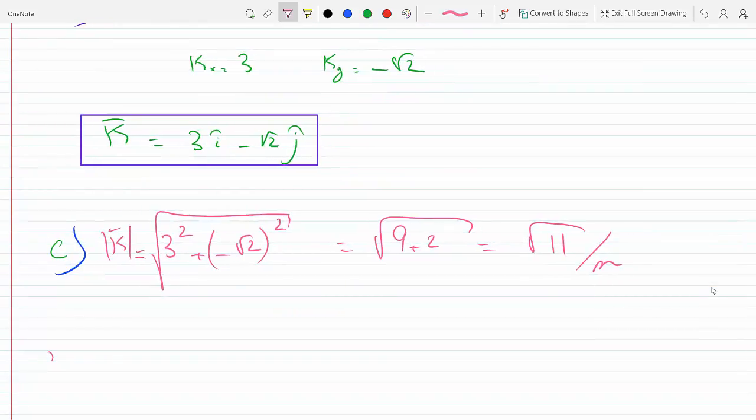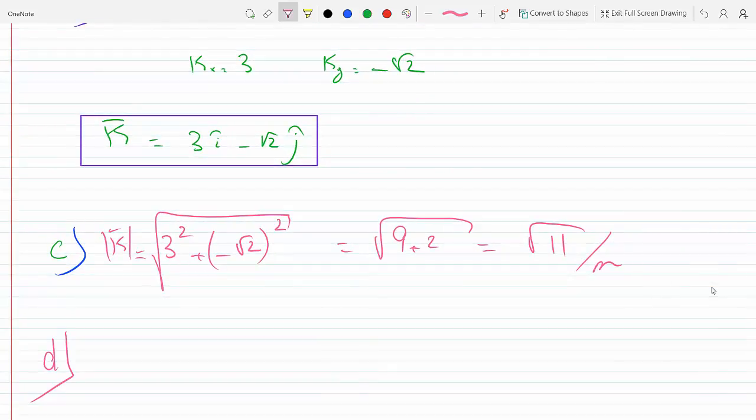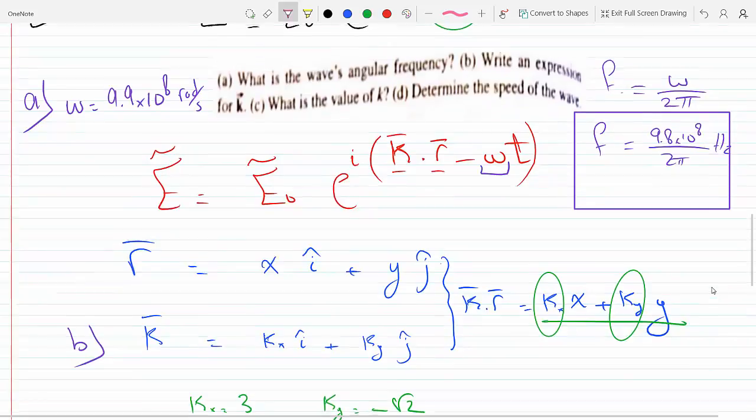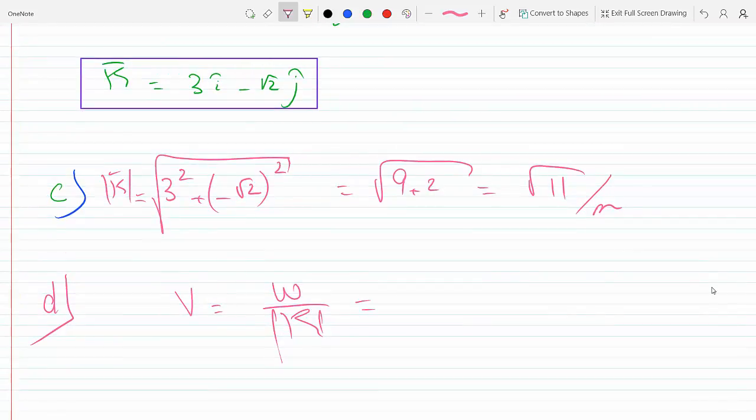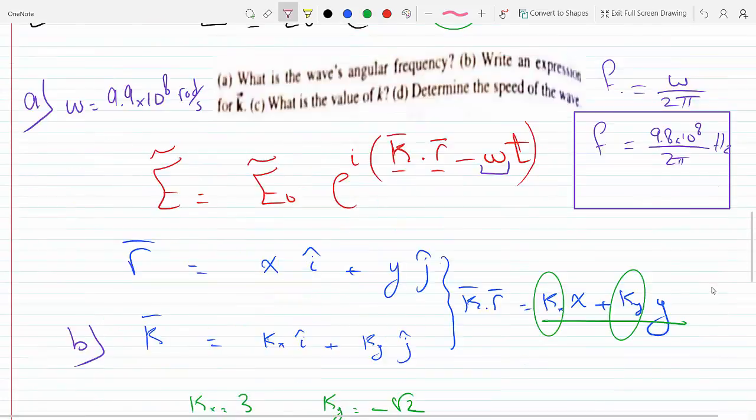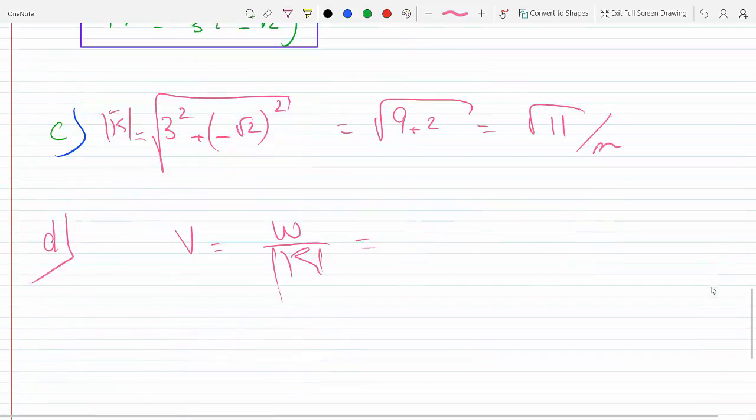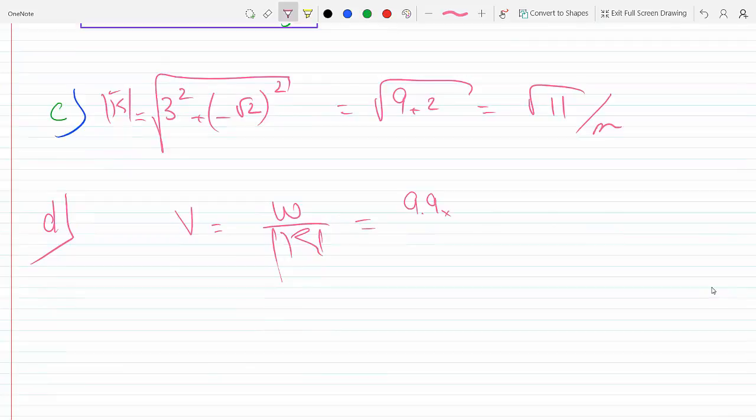And for part D, determine the speed of the wave. The speed of the wave is related to the angular speed by V being equal to omega over K. If we want the speed, we just need the absolute value of K, so this would be 9.9 times 10^8 over root 11 meters per second. So this is the speed.